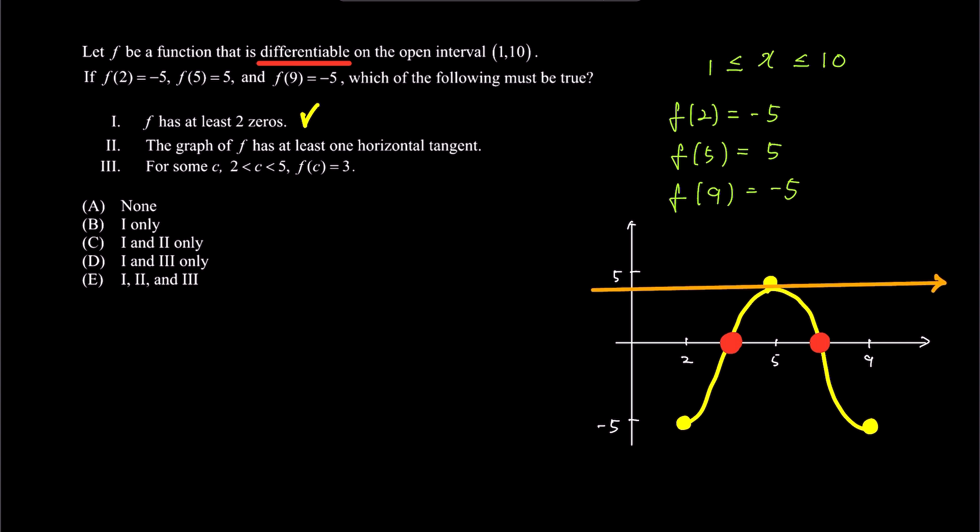Second, f of x has at least 1 horizontal tangent. Since the function is differentiable, the graph passing through these three points must turn smoothly without sharp turns, resulting in the possibility of having horizontal tangents. If the graph passing through these three points were more complex, like the one shown on the screen, you will have more horizontal tangents. Therefore, the second statement is indeed true.